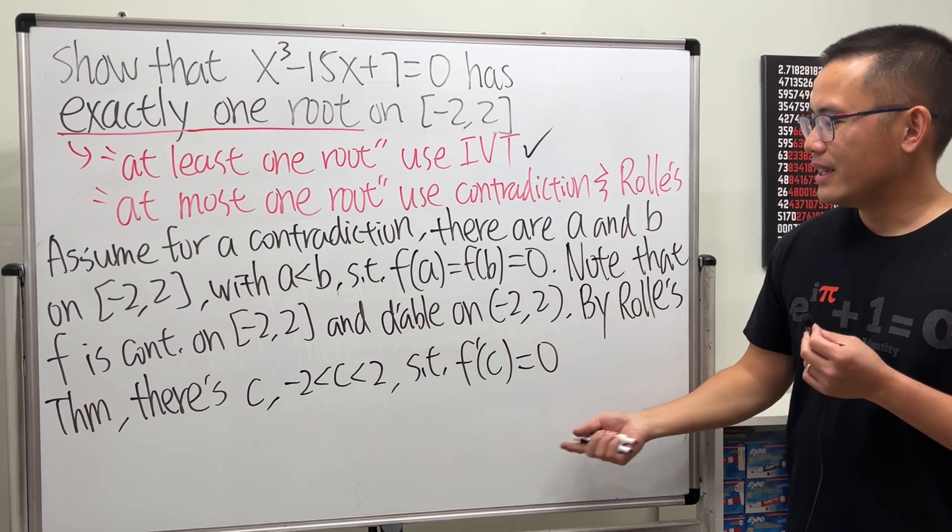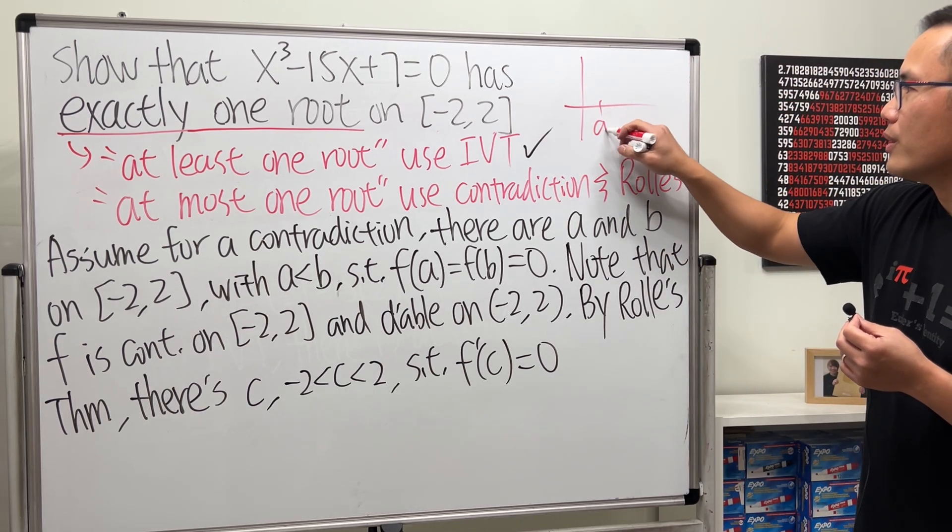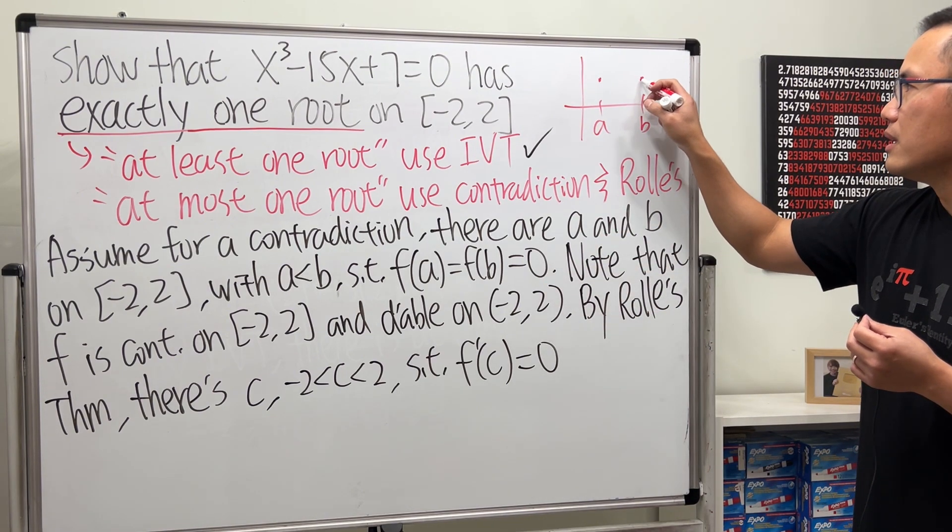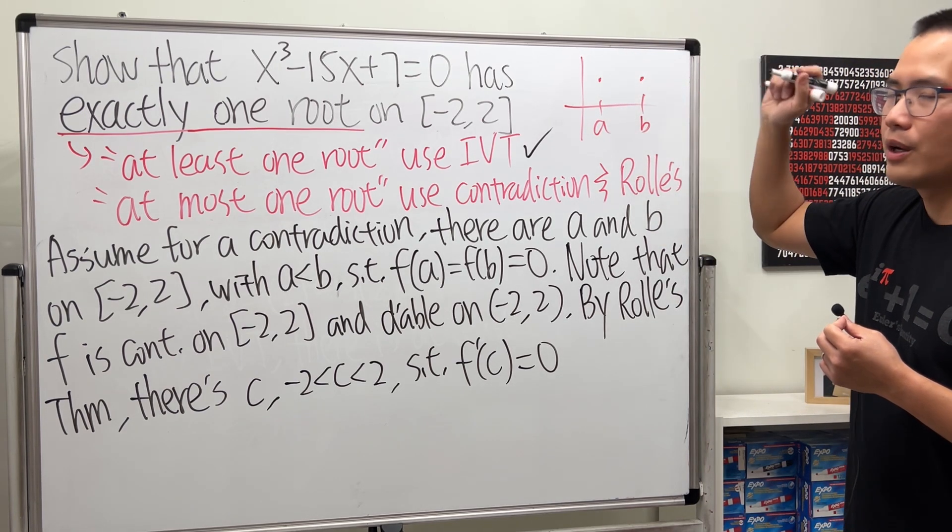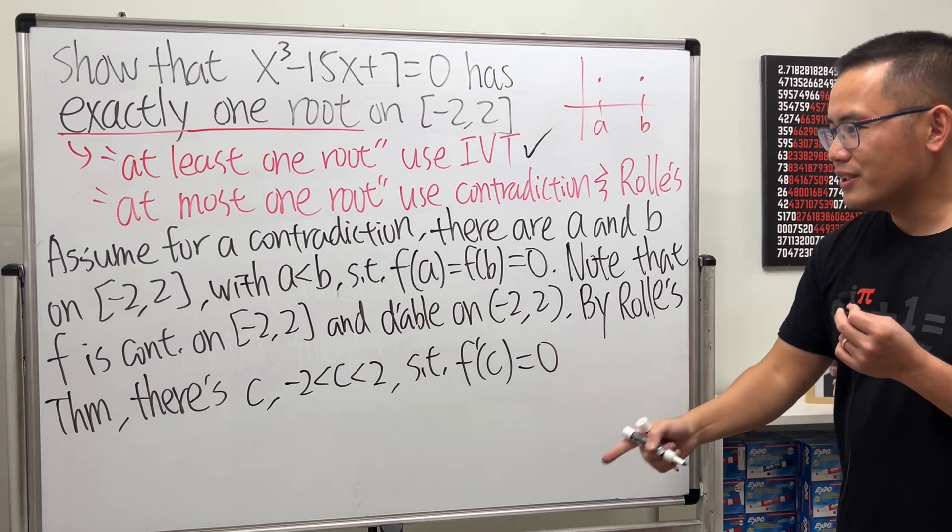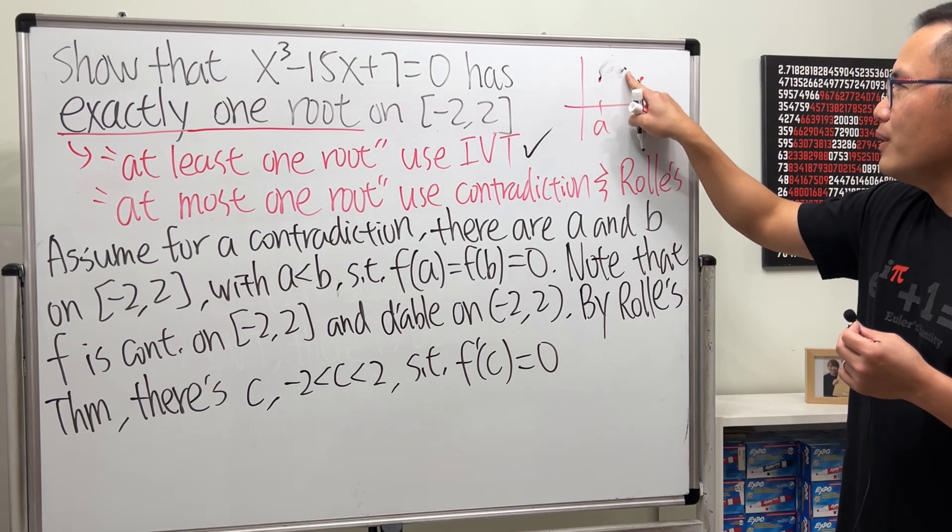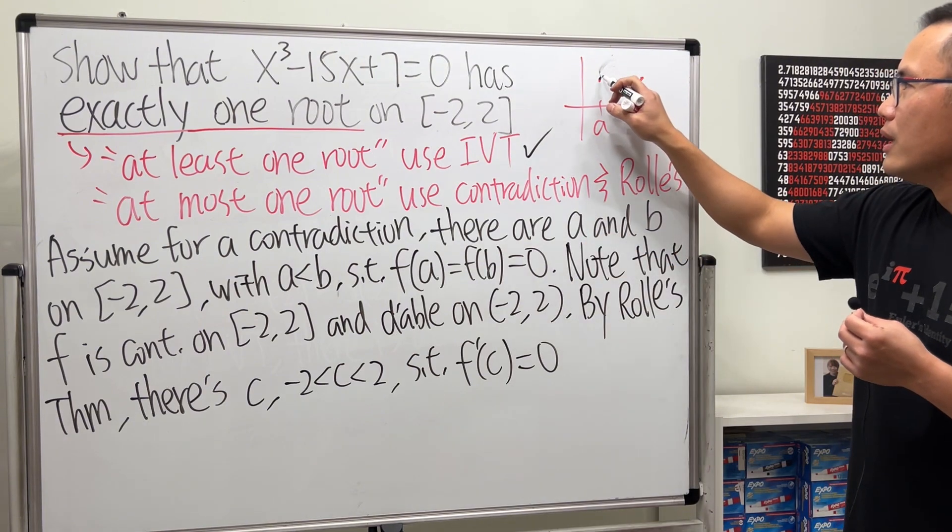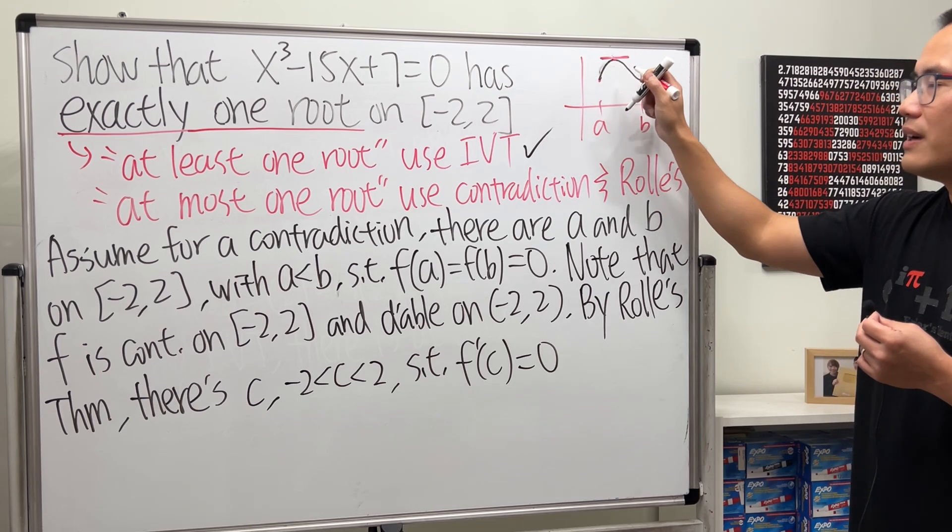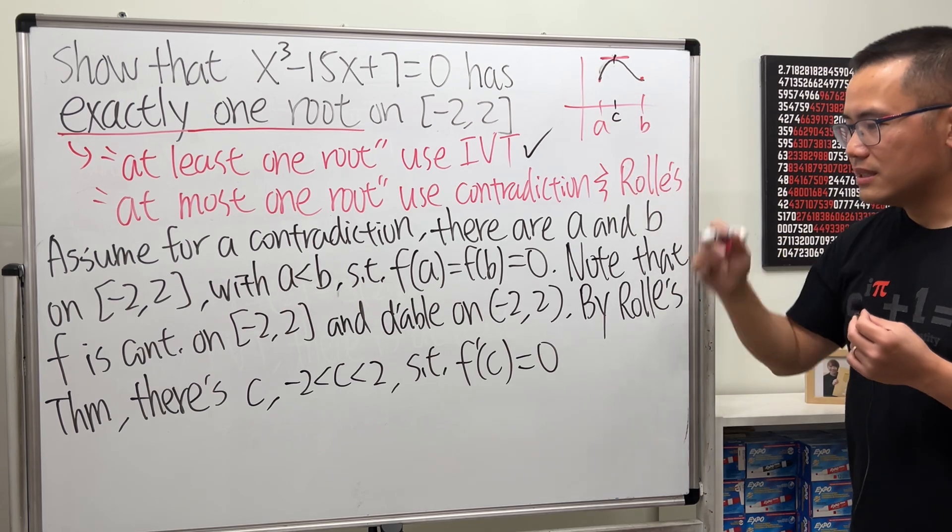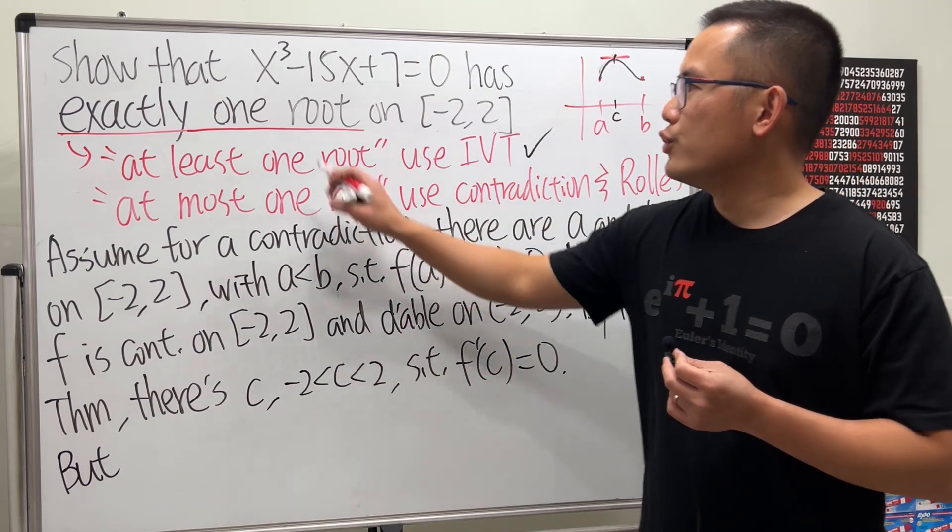When we have Rolle's Theorem, the derivative at c is equal to zero. Why? Well, have a look. Let's say in general we have a and b here. Because f of a is equal to f of b, they have the same y value. Because f is continuous, you have to make sure you connect them without lifting your marker, right? But you also have to make sure that f is differentiable, so do not do this—that's not okay. Well, if you follow what we have, a continuous function and also differentiable function connecting this and that, you can see that there is some point where the derivative has to be zero. So that's where the c is. But we haven't computed the derivative yet, right? Remember this is our function.